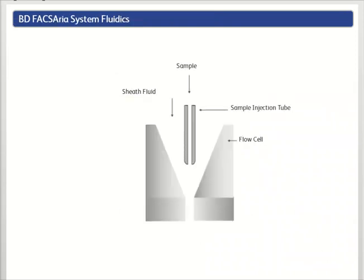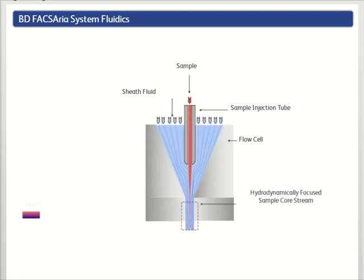In cytometers such as the BD FACSAria system, the sample stream flows downward through the cuvette flow cell, is interrogated by the laser beam in the cuvette, and eventually exits through the nozzle tip.